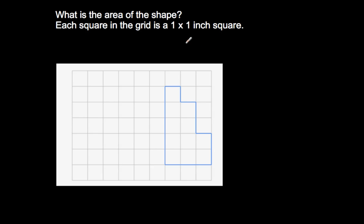In this case, we're being asked to find the area of the shape, and we're told that each square in the grid is a one-by-one inch square. It has a length of one, so it is going to be a unit square, and the name of this unit square is called a square inch. This would be one square inch, this would be another square inch, and another square inch right here. To find the area of the shape, all we're going to do is count the unit squares.